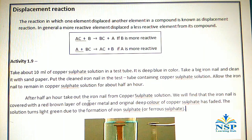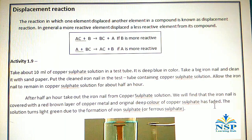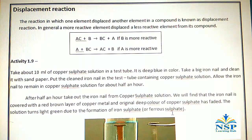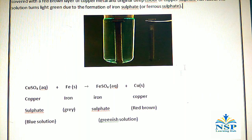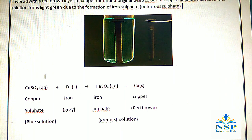After half an hour, take out the iron nail from the copper sulfate solution. We will find that the iron nail is covered with a red-brown layer of copper metal, and the original deep blue color of the copper sulfate has faded. The solution turns light green due to the formation of iron sulfate (ferrous sulfate). The equation is: CuSO₄ + Fe → FeSO₄ + Cu. Iron displaces copper from the copper sulfate solution.